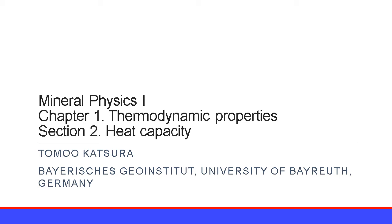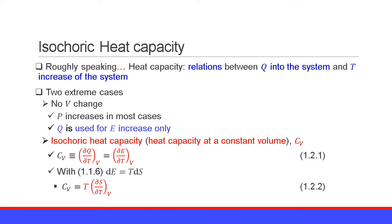The second section of Chapter 1 is heat capacity. Roughly speaking, the heat capacity is the relation between heat into the system and the temperature increase of the system.